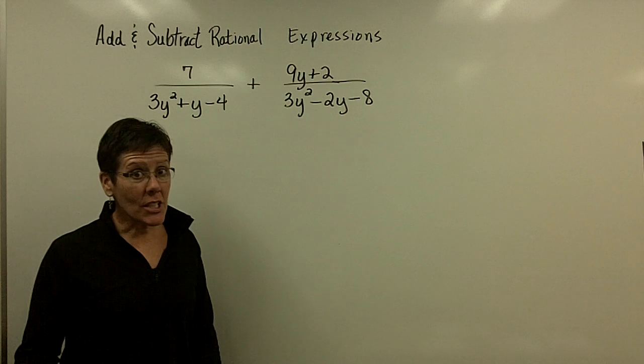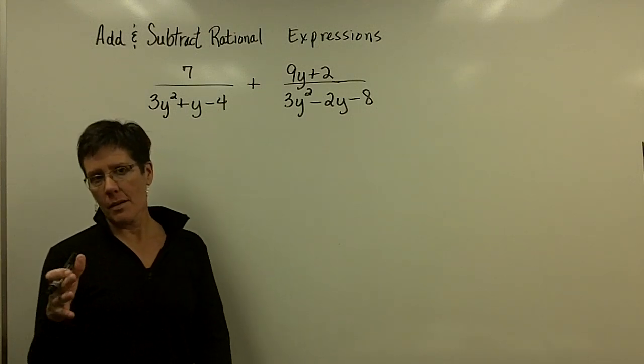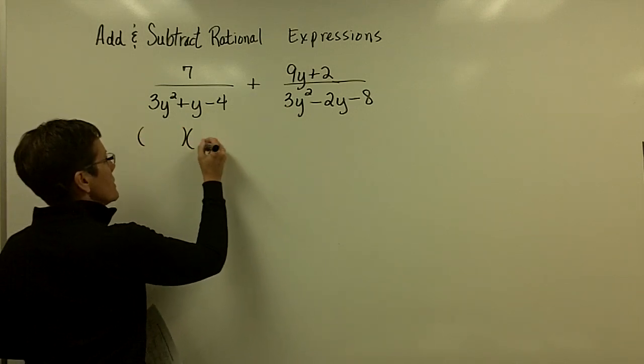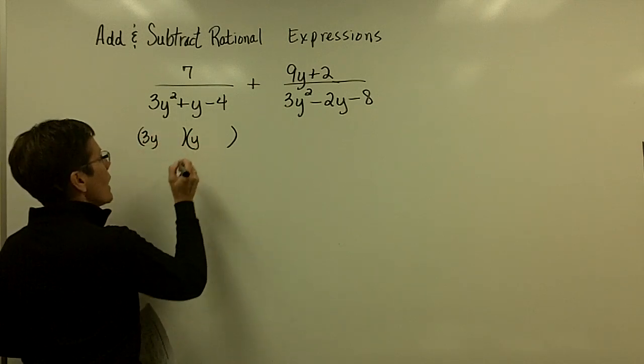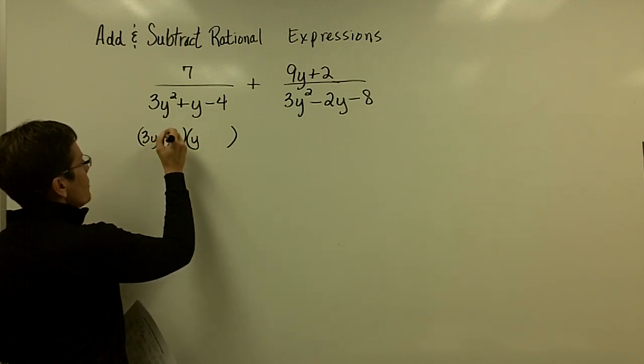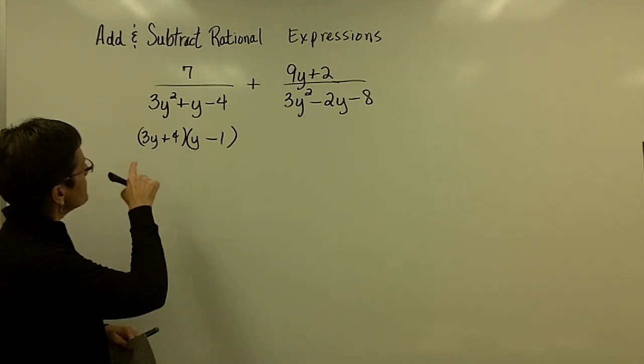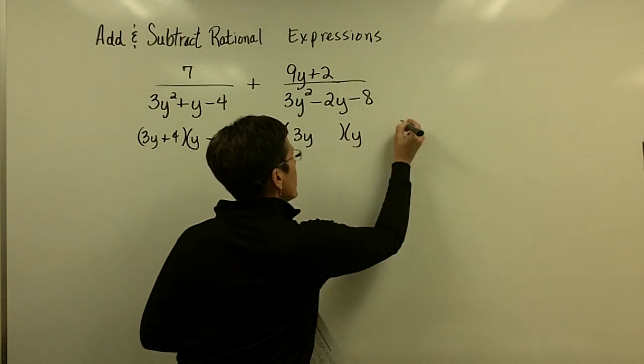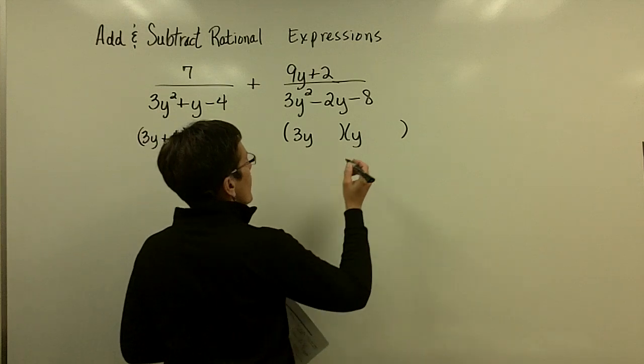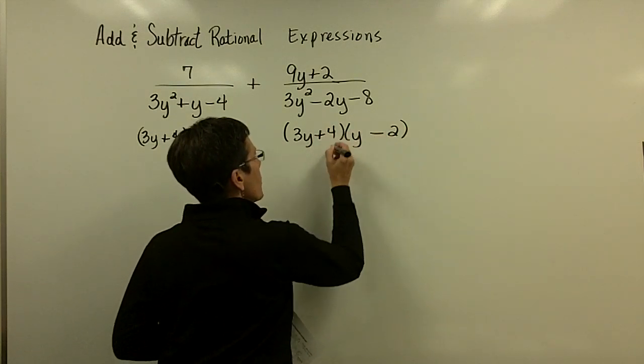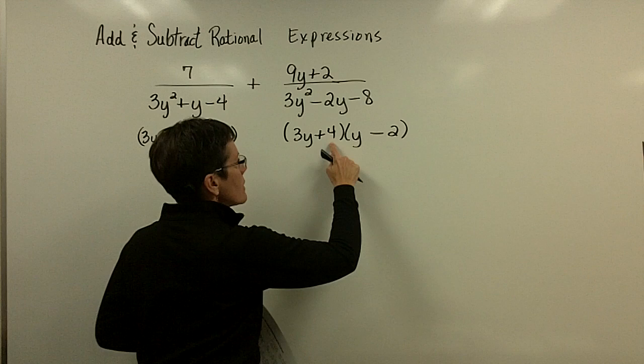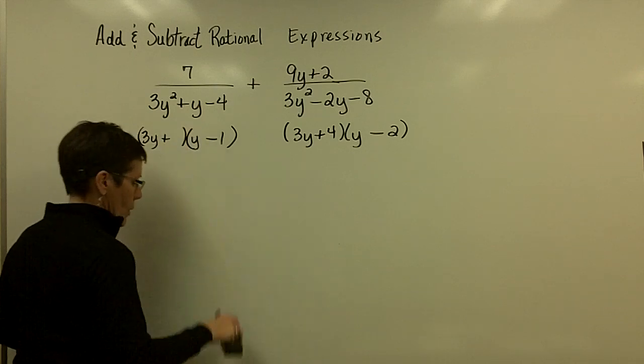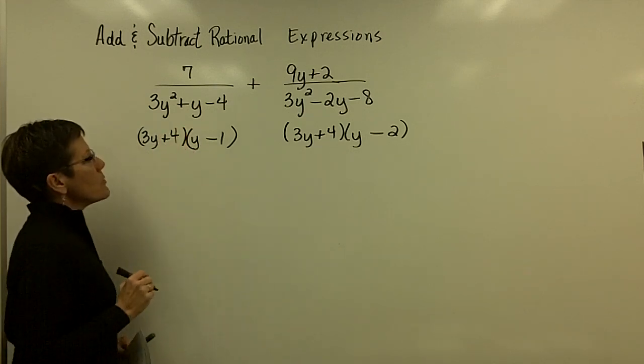Got to factor the denominators. I'm not going to use the AC method to do this. I'm just going to do this, if you will, trial and error. But, I tend to be pretty good at being able to figure out that I'm going to need to factor this denominator. I'm going to need a 3y and a y here. And, I think I'm going to need a positive 4 here and a minus 1 there. Yeah. That's the correct factorization. And, then here, I'm going to eyeball it. Probably, I'm going to need a minus 2 here and a positive 4 there. I'm just checking this minus 6 and positive 4 is a minus 2. Yeah. That looks good. So, this is a little hard to read. Let's fix that 4. So, there's the factored form of the denominators.